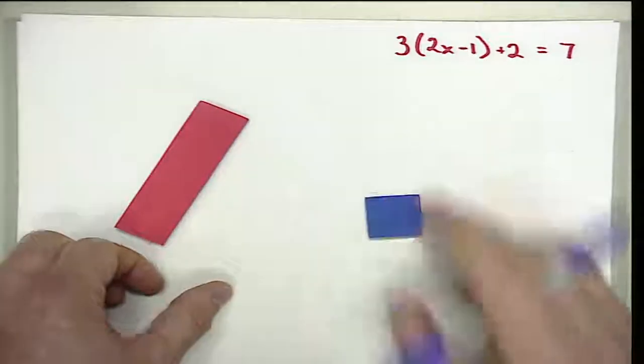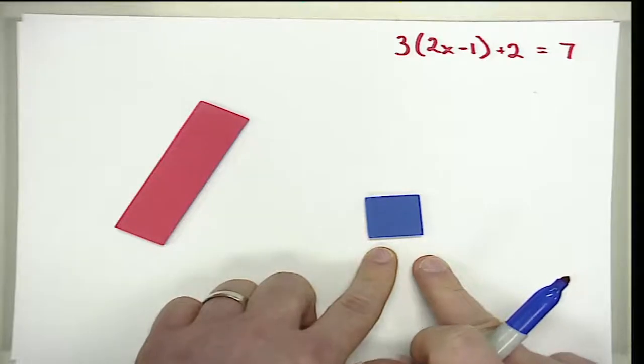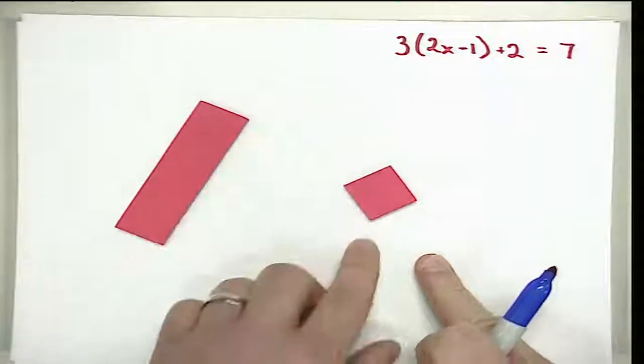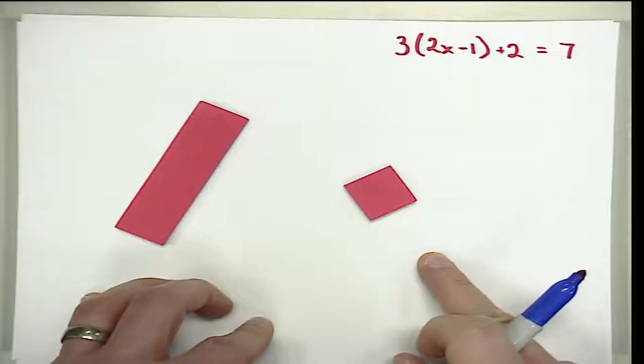The smaller pieces represent a value of one, where blue was a positive one and the red was a negative one. So we were able to represent expressions and then manipulate those expressions and equations to be able to solve equations.